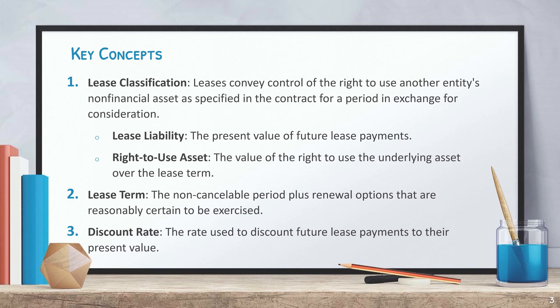Let's first look at some key concepts of GASB 87. Lease classification: leases convey control of the right to use another entity's non-financial asset as specified in the contract for a period in exchange for consideration. Lease liability: the present value of future lease payments. Right-to-use asset: the value of the right to use the underlying asset over the lease term.